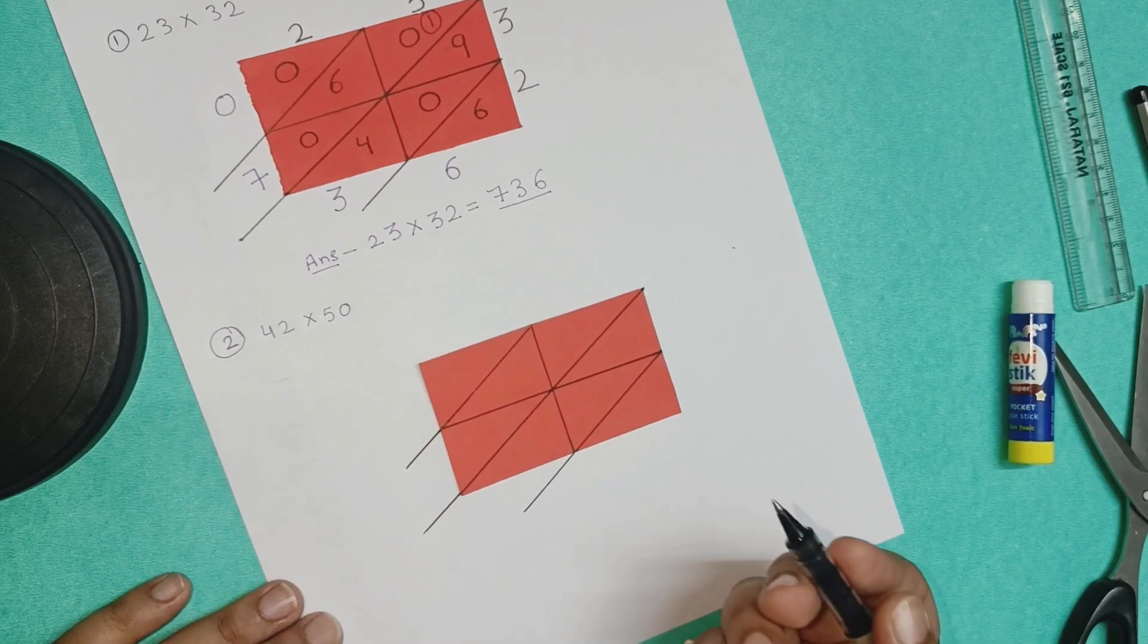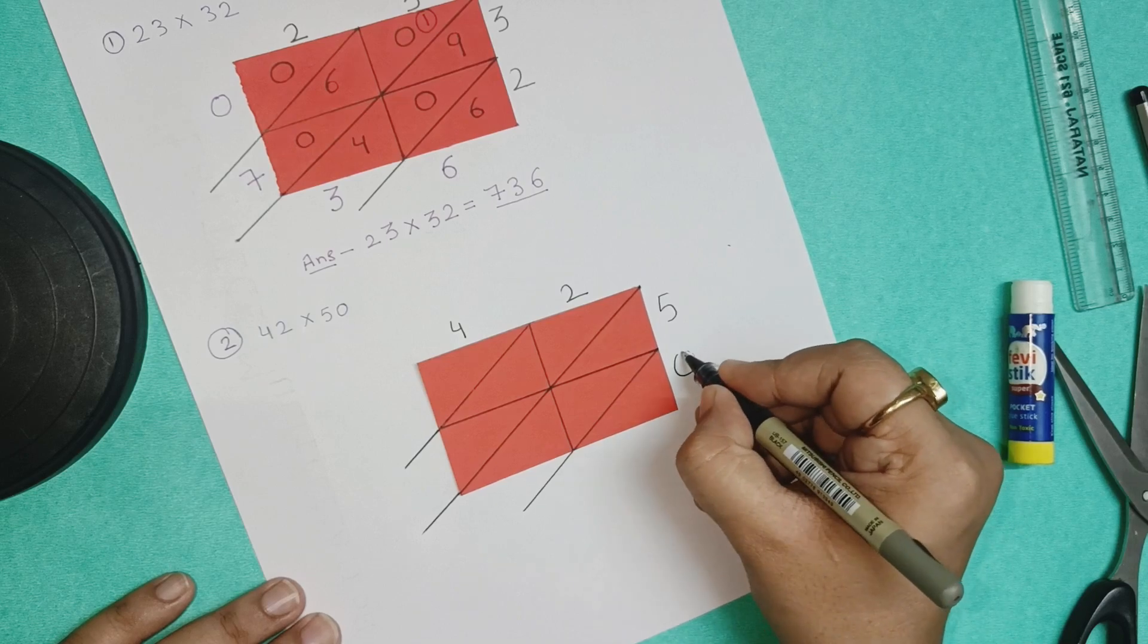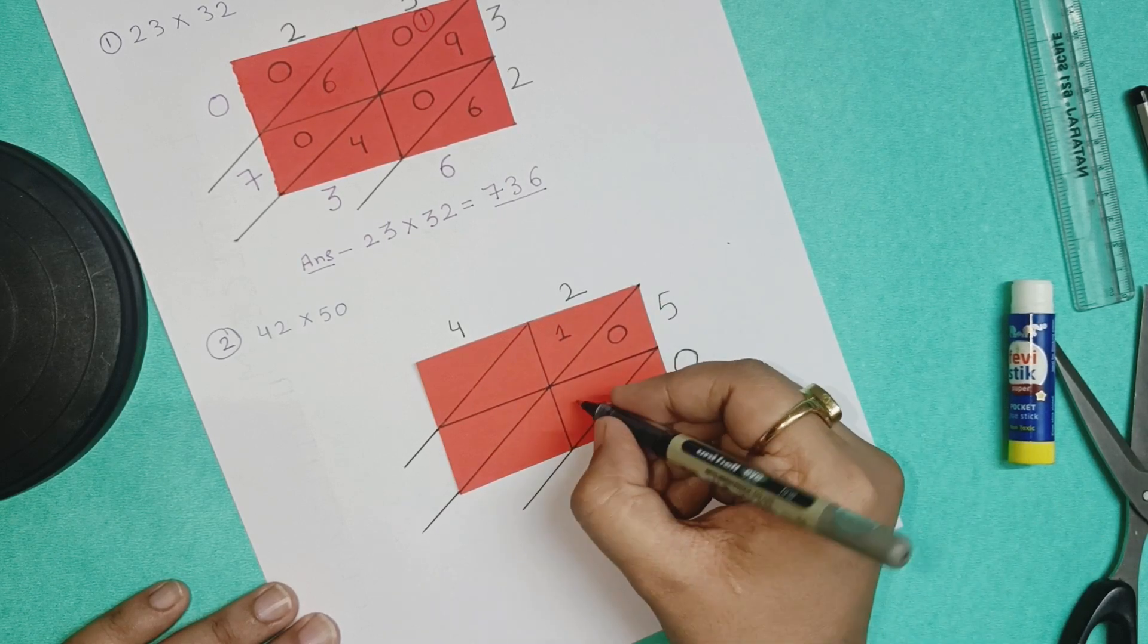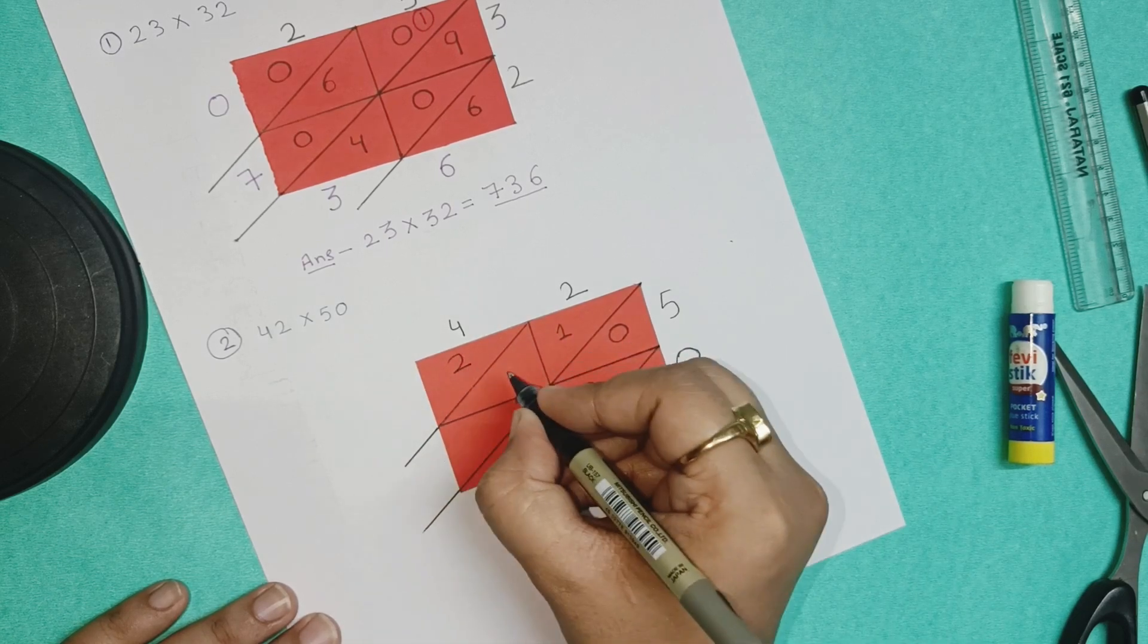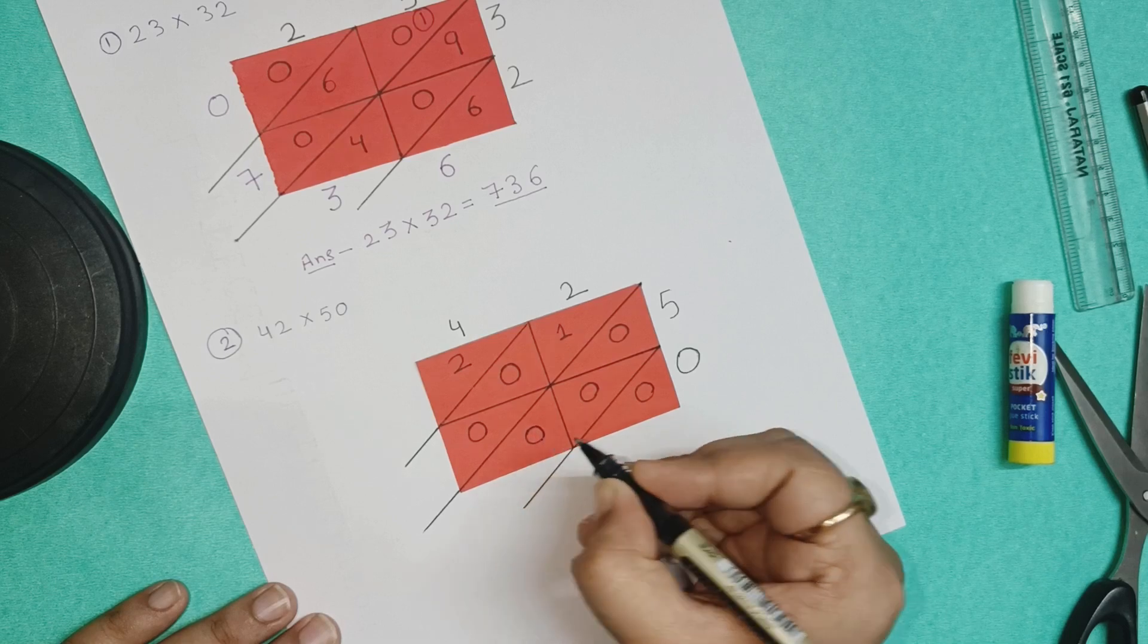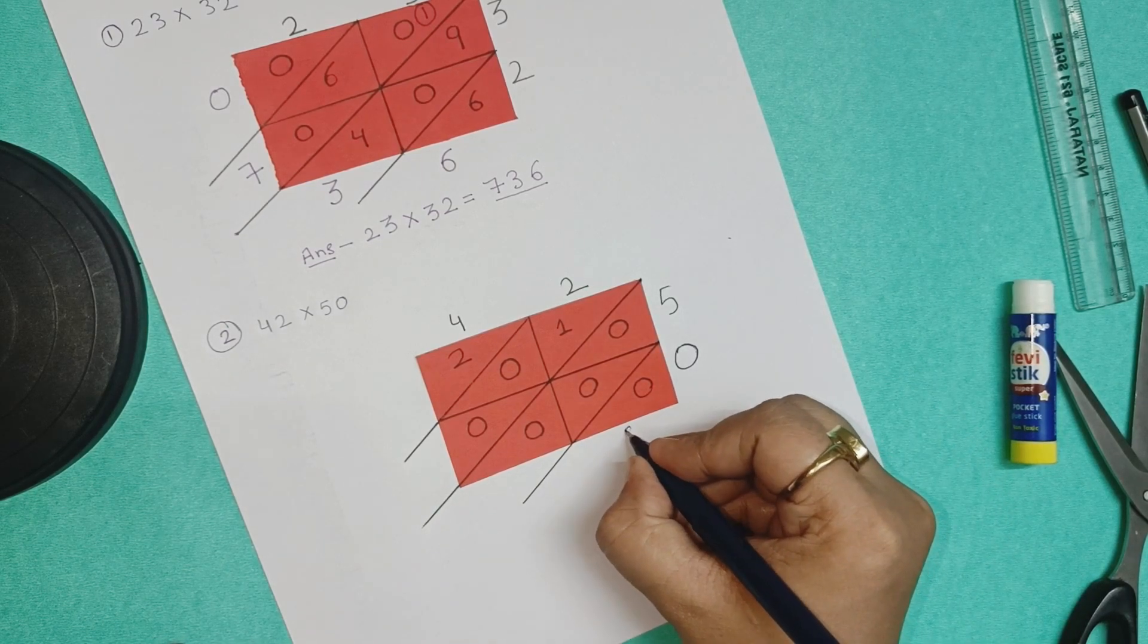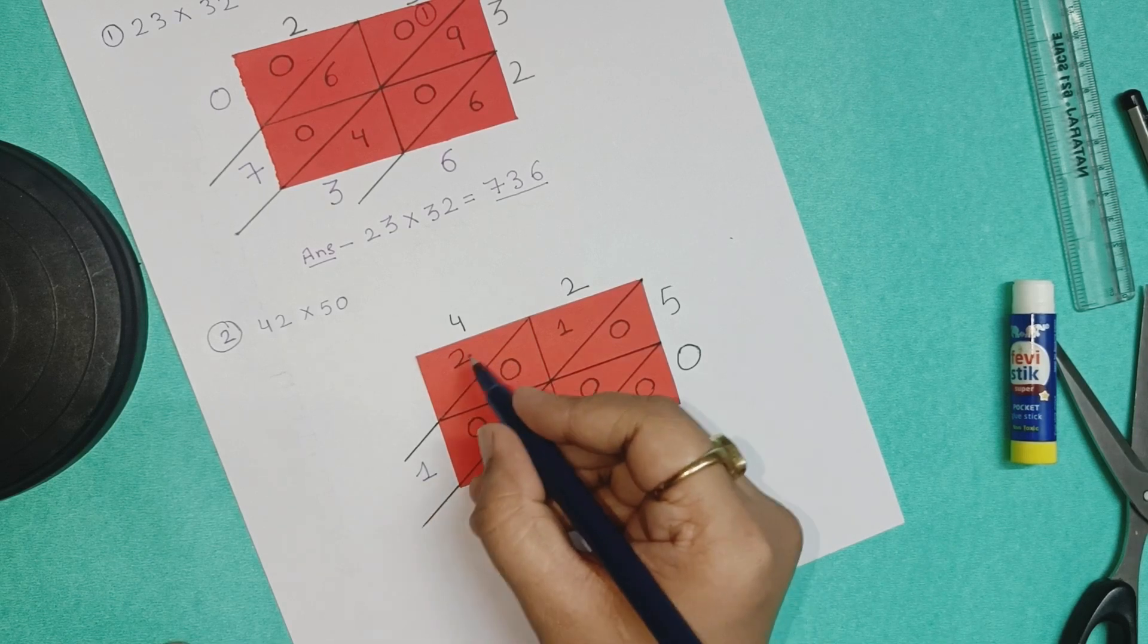Now let us start the multiplication. We will write 4 here, 2 on the next box, 50 sideways, 5 and 0. Let us start with the multiplication. 2 times 5 is 10. Let us write 10, 1 and 0. And 2 0's are 0, so we will write 2 0's over here. Now 4 times 5 is 20, so 2 and 0 over here. 4 0's are 0, so we will write 0. Now we have to do the addition. 0, 0, 1 and 2, 0 is 0 and all 0's are again 0, 1, 0, 0 is 1 and here comes 2.